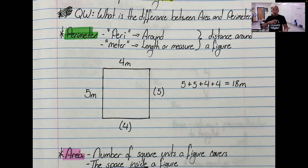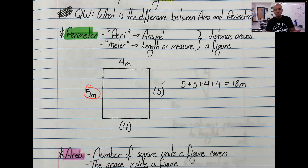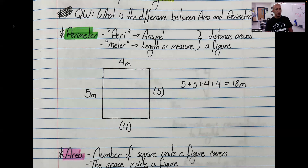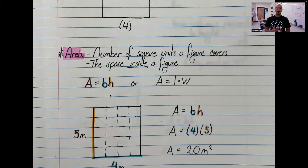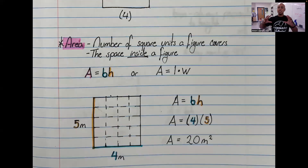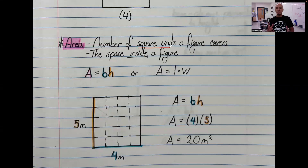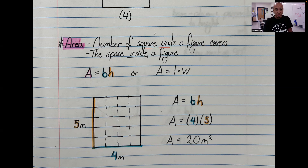In a parallelogram, opposite sides will always be the same length. So if one side is five meters, the opposite side is also five; if one is four, the other is four — add them all up and you get 18. Area is different: area is the space inside a figure. The actual definition is the number of square units that a figure covers — how many little squares fit inside a shape.